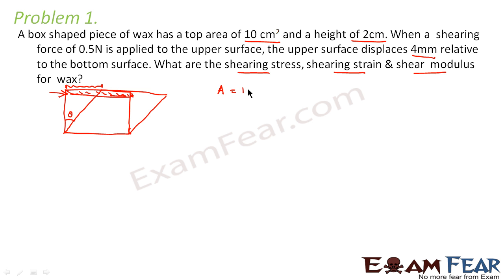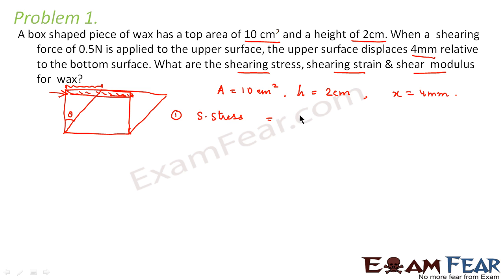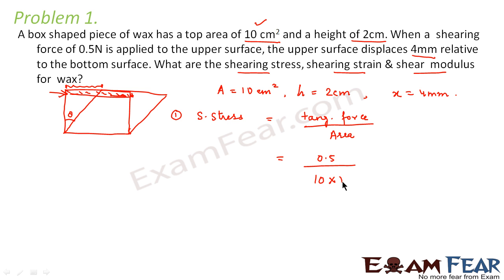The top area is given as 10 centimeter square, height as 2 centimeters, and the displacement delta X is 4 millimeters. Now let us calculate the shearing stress. By definition, shearing stress is the tangential force divided by the area of the face. The force applied is 0.5 Newton and the area of the top face is 10 centimeter square, that is 10 times 10 to the power minus 4 meter square. So this comes out to be 500 Pascal.